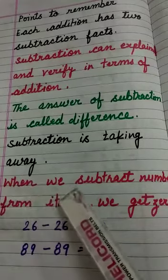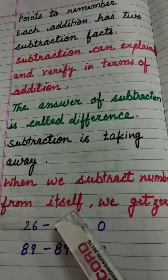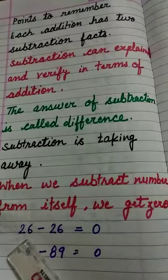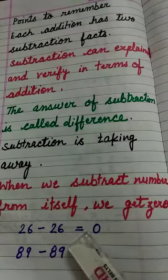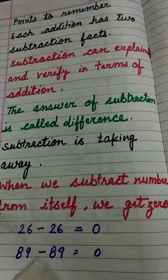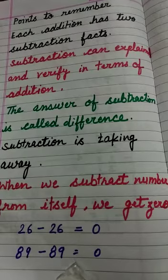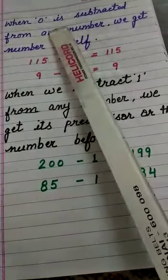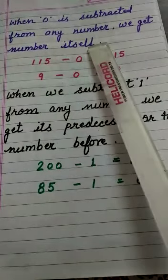When we subtract a number from itself, we get 0. For example, 26 minus 26 equals 0. Next, 89 minus 89 equals 0 again.